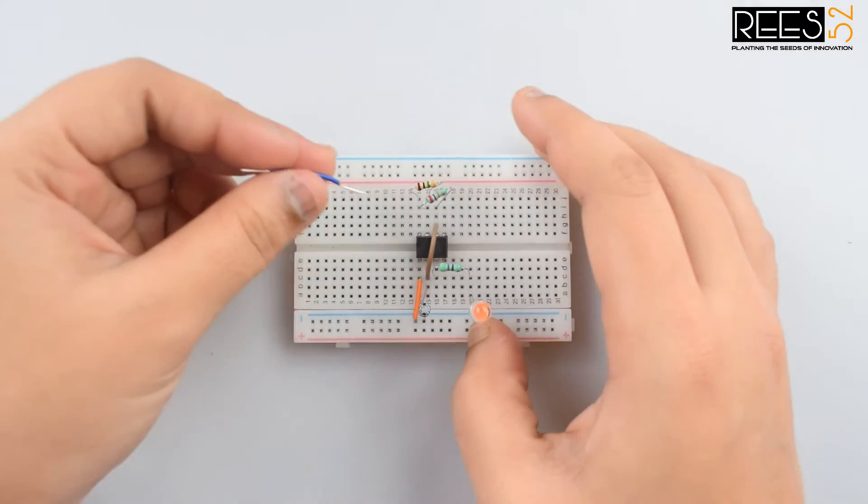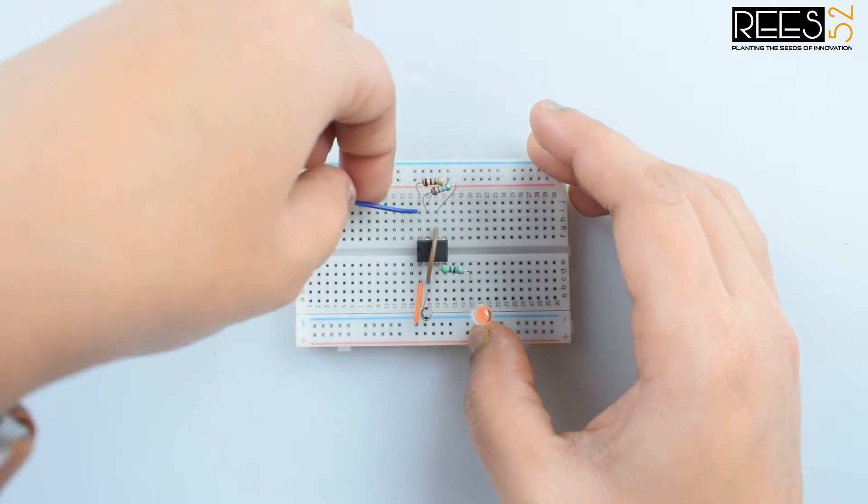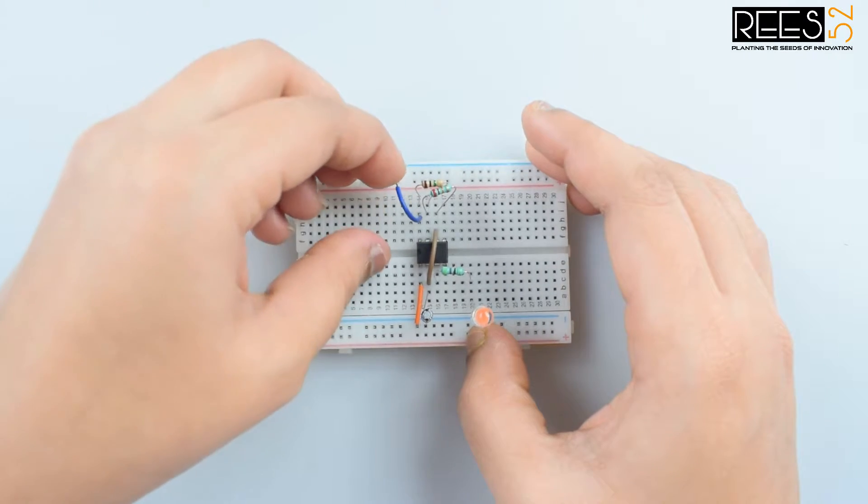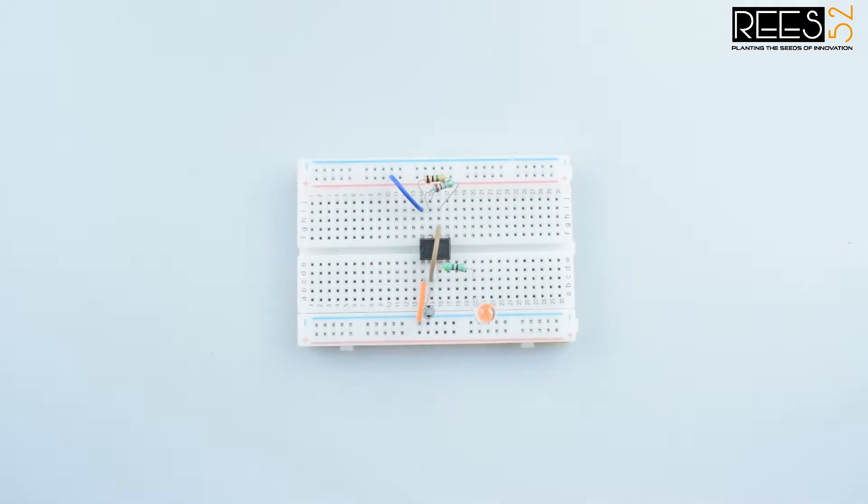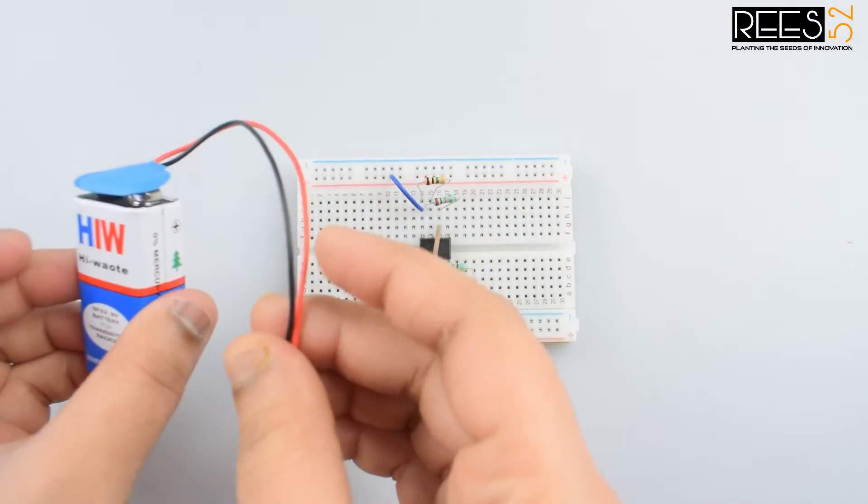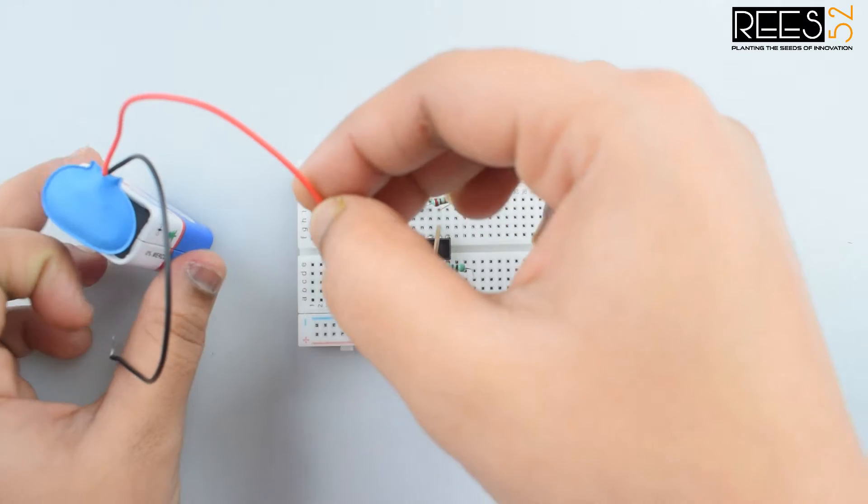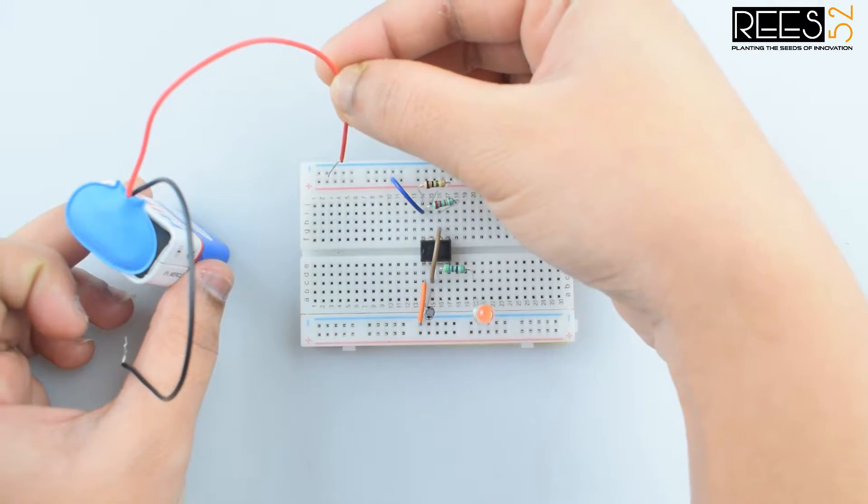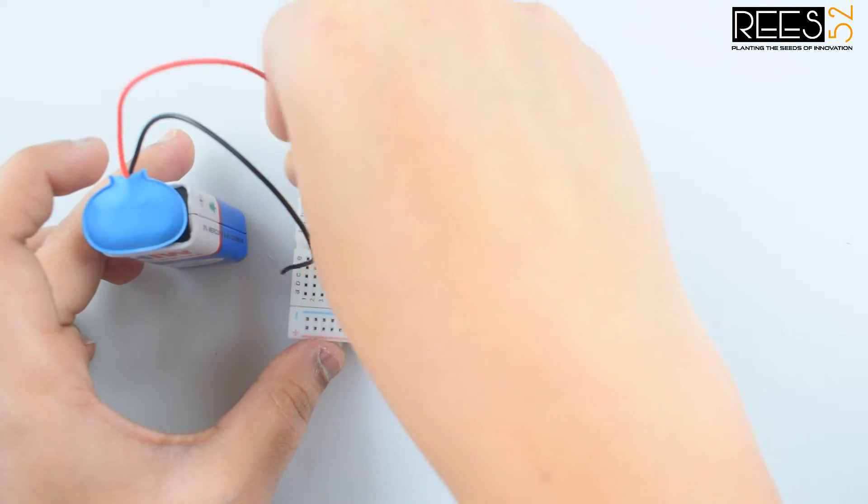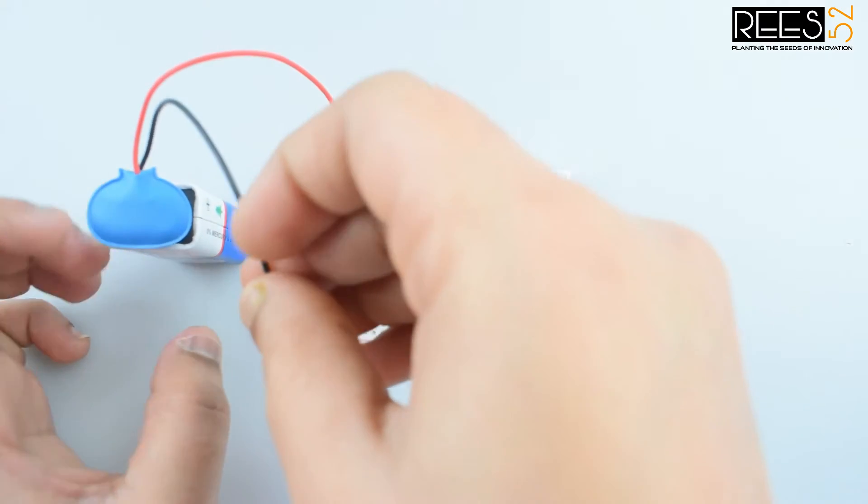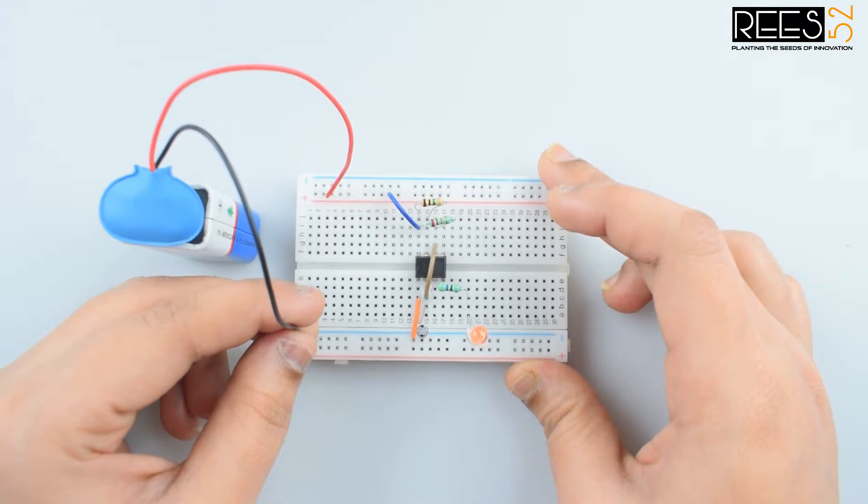Now connect pin 8 of the 555 timer IC to the positive rail. Now connect the battery. The red wire, that is the positive wire, connect it to the positive rail on the breadboard, and the black wire, that is the negative wire, connect it to the negative rail on the breadboard.